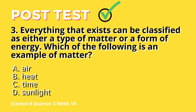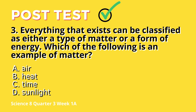Question 3: Everything that exists can be classified as either a type of matter or a form of energy. Which of the following is an example of matter? A. Air, B. Heat, C. Time, D. Sunlight.